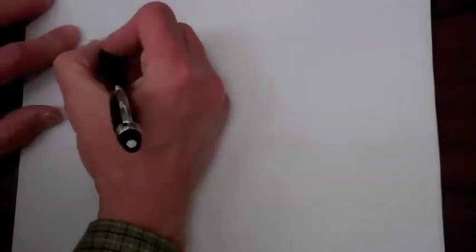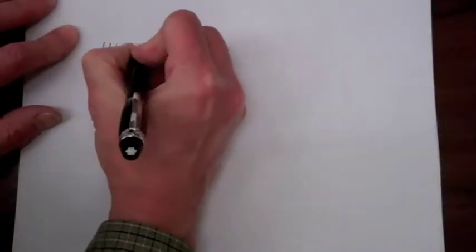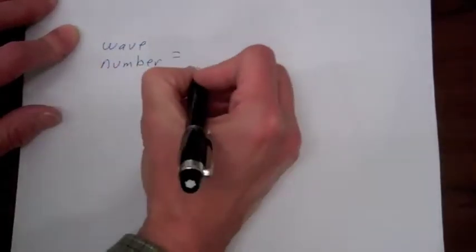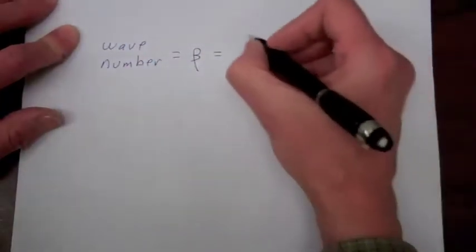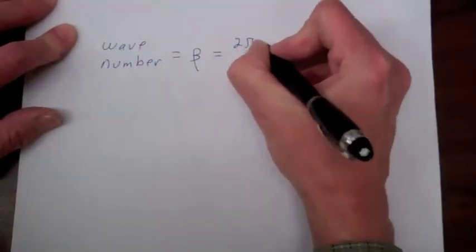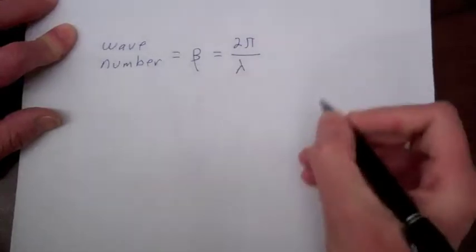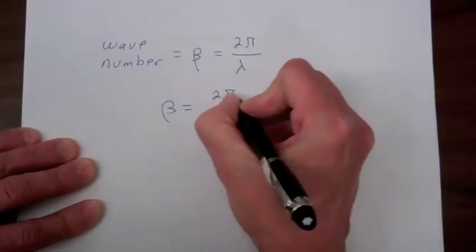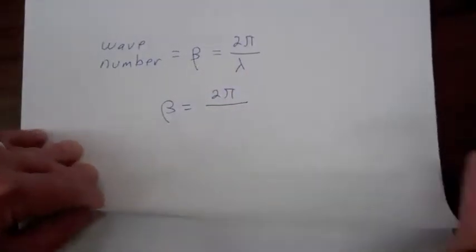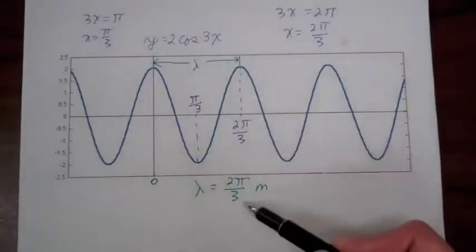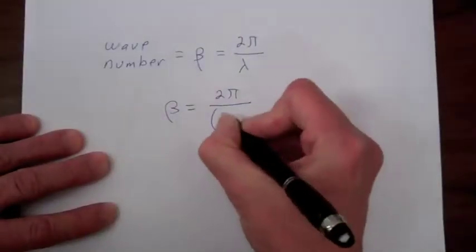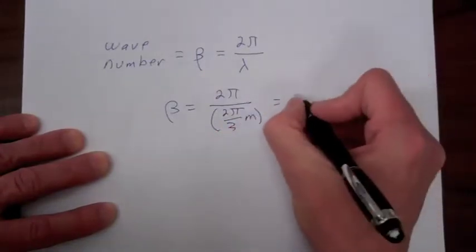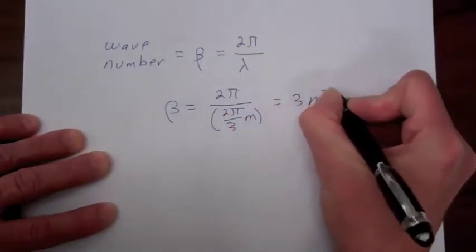I now want to define the wave number for a wave. The symbol we use is beta, and it is equal to 2π over the wavelength. For this particular wave, beta is equal to 2π over the wavelength. We just found that the wavelength is 2π/3 meters, so beta for this wave is 3 inverse meters.